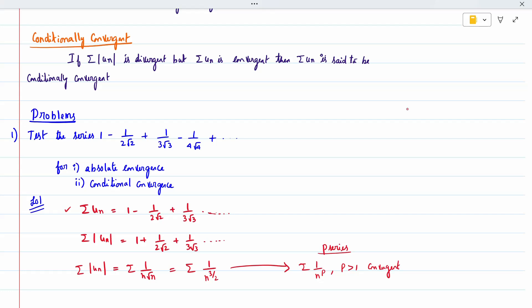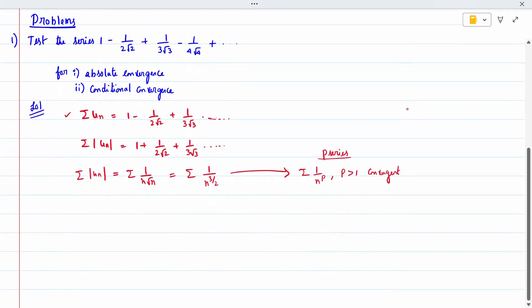Applying this to our question, we have p = 3/2, which is greater than 1. Since p > 1, the sum of |uₙ| is convergent, which means the sum of uₙ is absolutely convergent.